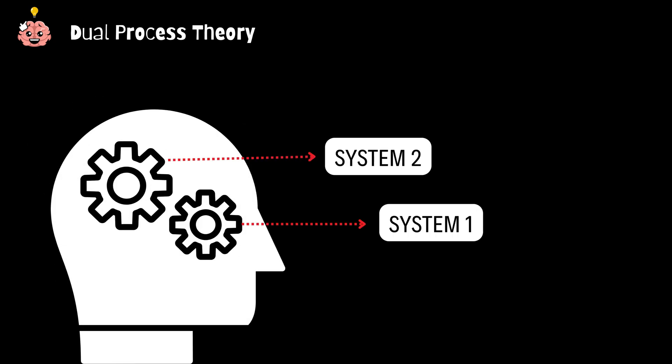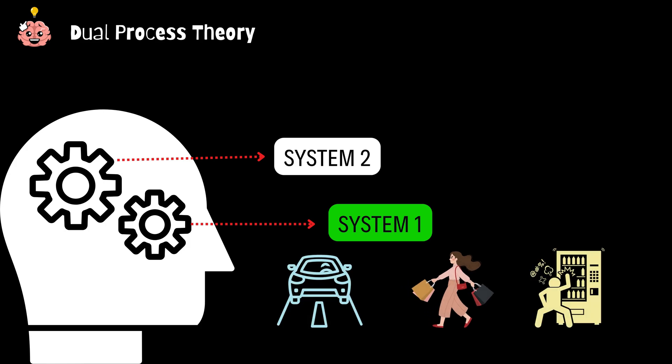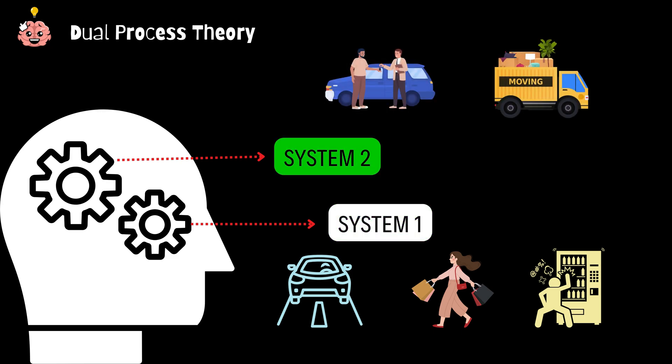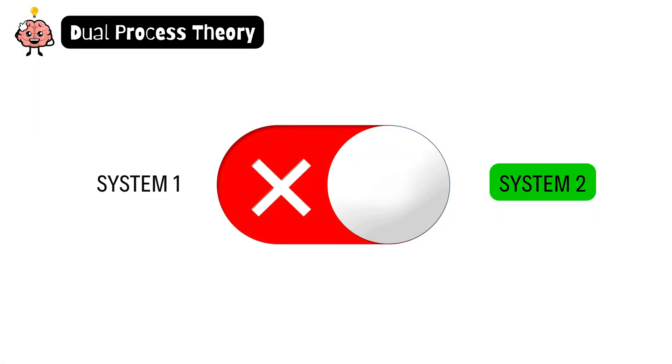Think of system one as your default mode, handling the basics like driving, shopping, or surviving a vending machine encounter. But when you face something more complex like buying a new car or moving to a new city, system two steps in, making you weigh pros and cons, think long term, and analyze every tiny detail. It's like switching from cruise control to manual driving.